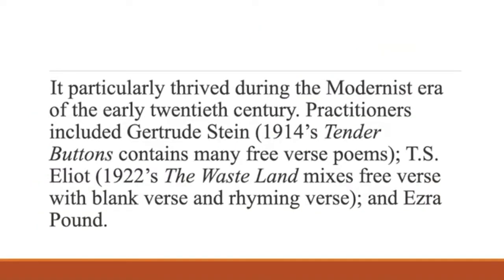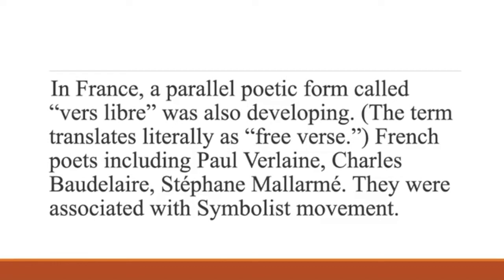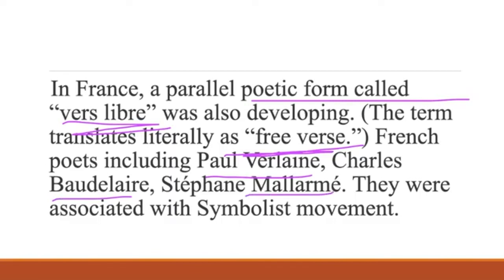In the modernist era free verse flourished, and you find T.S. Eliot's and Ezra Pound's poems as prime examples. The Waste Land is a poem that has a mixture of free verse, blank verse, and rhyming verse, but it is often cited as an example of free verse. Eliot's The Love Song of J. Alfred Prufrock is another example, though it also has mixed verse forms. In France, a parallel poetic form called vers libre was associated with poets like Paul Verlaine, Charles Baudelaire, and Mallarmé, all connected with the Symbolist movement in literature.